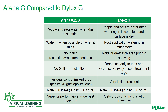Arena also doesn't have any thatch restrictions, whereas Dialogs has a tendency to get held up in the thatch layer with a recommendation to rake or dethatch prior to applying. Arena also has no golf turf restrictions, whereas broadcast applications of Dialogs are limited to tees and greens, with only spot treatments allowed on fairways.